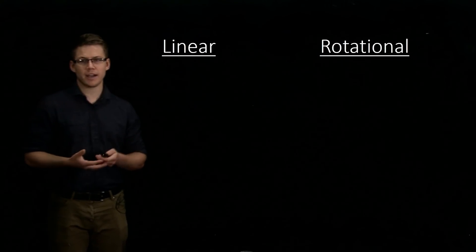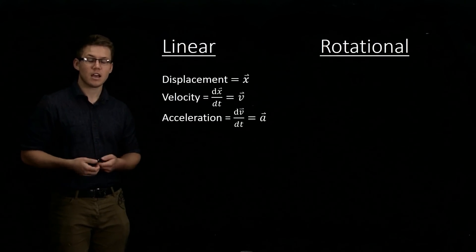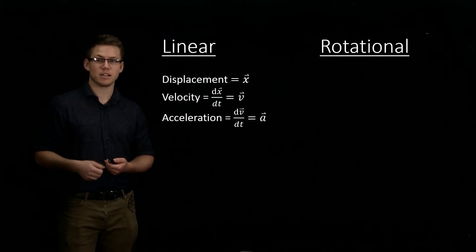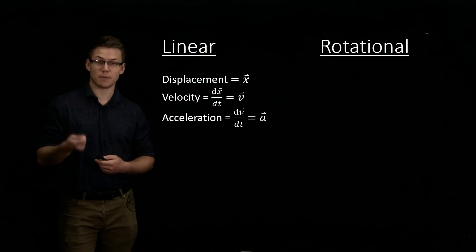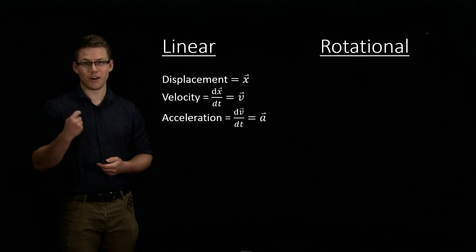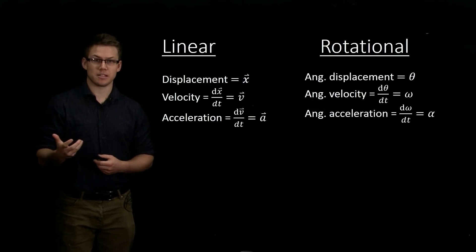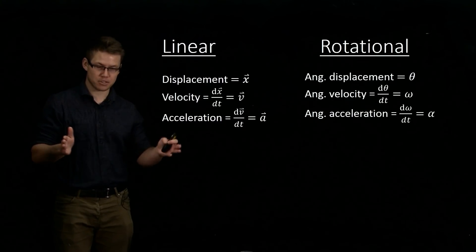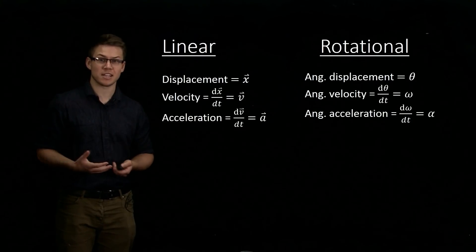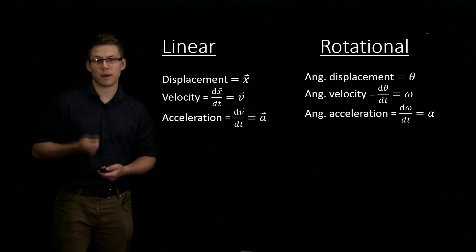Just a reminder: in linear motion, we have displacement, which we call x, and we have a velocity, which is the derivative of that displacement, and we have an acceleration, which is the time derivative of the velocity. All of these are vector quantities. Now, in rotational motion, we have things like angular displacement — we set up a coordinate system with an angle theta — and then we can talk about the angular velocity, i.e., how fast theta changes with time, and we can also talk about an angular acceleration.